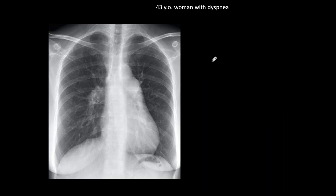We have a 43-year-old woman with dyspnea. At first glance the heart is a little enlarged, but the most important finding is an obvious convexity of the pulmonary artery arch, indicating dilatation of the main pulmonary artery. When we see that, we go and look at the hila. The right one is enlarged; the left one is hidden behind the pulmonary artery. We also look at the pulmonary vasculature — it is diminished, with no significantly enlarged vessels in the lower or upper lobes on either side.